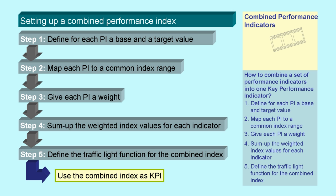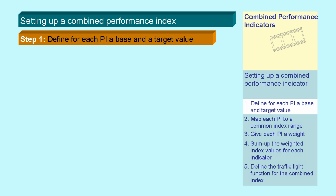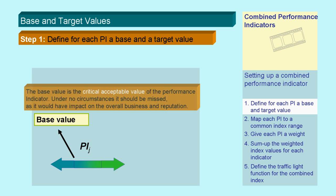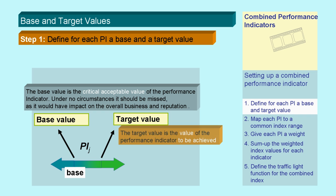Let's start with step 1. You need to assign to each performance indicator a base value. The base value is the critical value for this indicator. Under no circumstances should it be missed as it would have impact on the overall business and reputation. Of course, you also need to define the target value, which is the value of the performance indicator to be achieved.